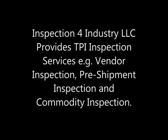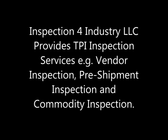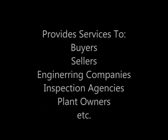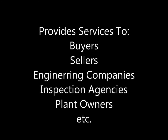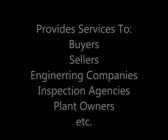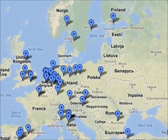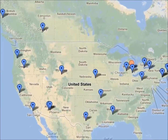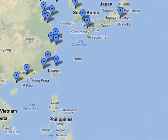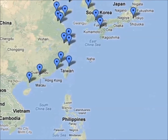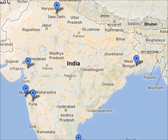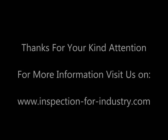Inspection for Industry LLC provides third-party inspection services including vendor inspection, pre-shipment inspection, and commodity inspection. These services are available to buyers, sellers, engineering companies, inspection agencies, plant owners, traders, and other third-party inspection users worldwide. With associate partners around the globe, the company coordinates and executes third-party inspection orders at competitive prices. Inspection engineers in vendor and seller countries carry out orders with precise coordination, expediting, and management. For more information, visit www.inspectionforindustry.com.